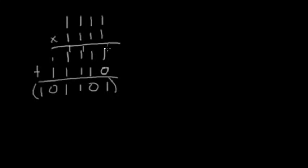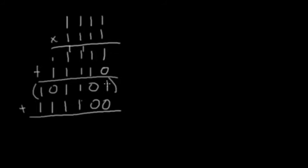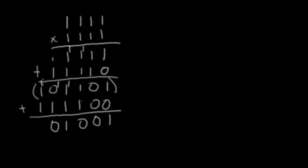Moving on to the third place value, fill in two zeros and then 1 times 1 is 1, 1 times 1 is 1, 1 times 1 is 1, 1 times 1 is 1. Add this to the running temporary total: 1 plus 0 is 1, then 0 carry the 1, then 3 so 1 and carry 1, then 1 plus 1 is 0 carry the 1, then 3 giving 1 and carry 1.